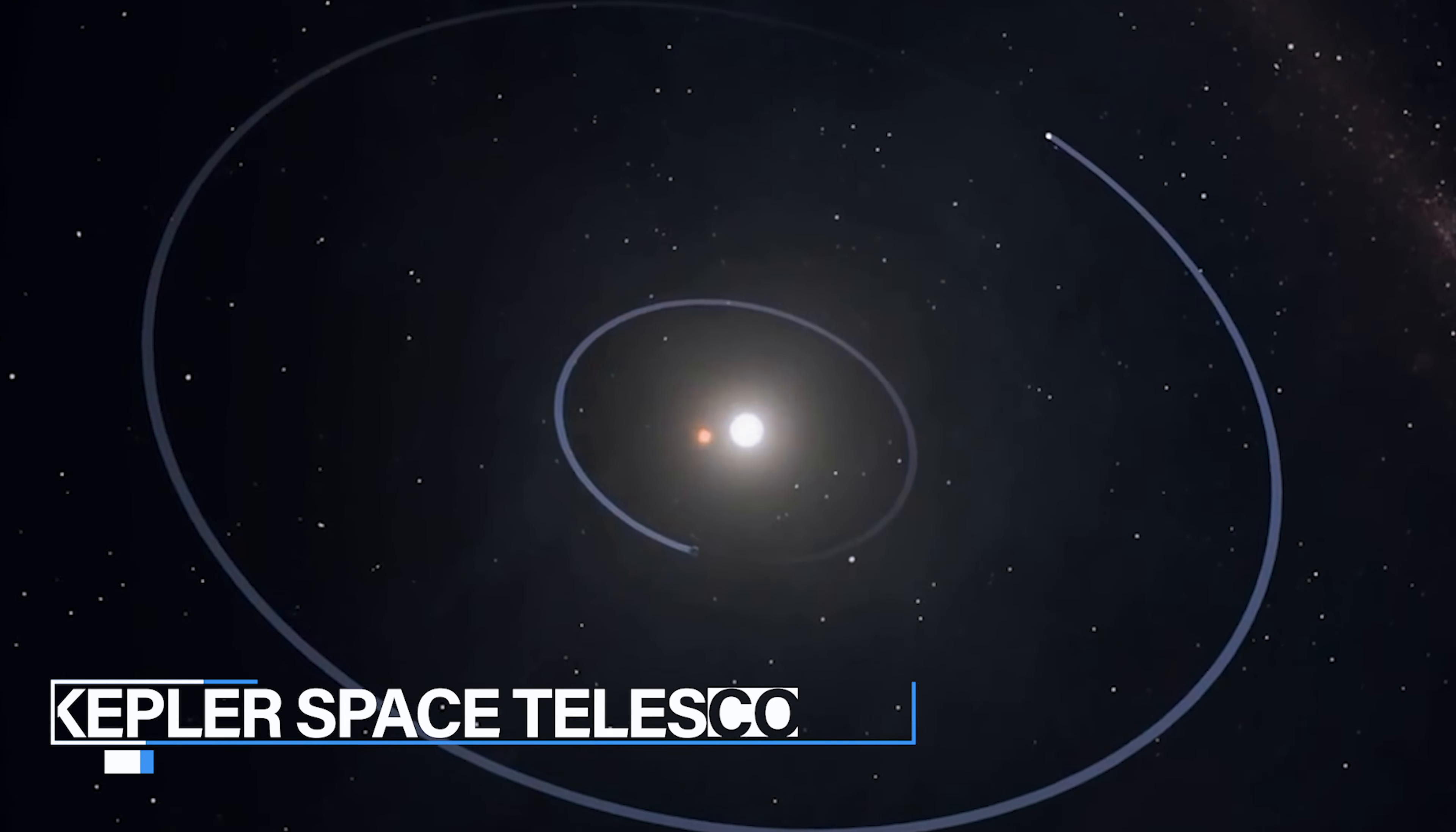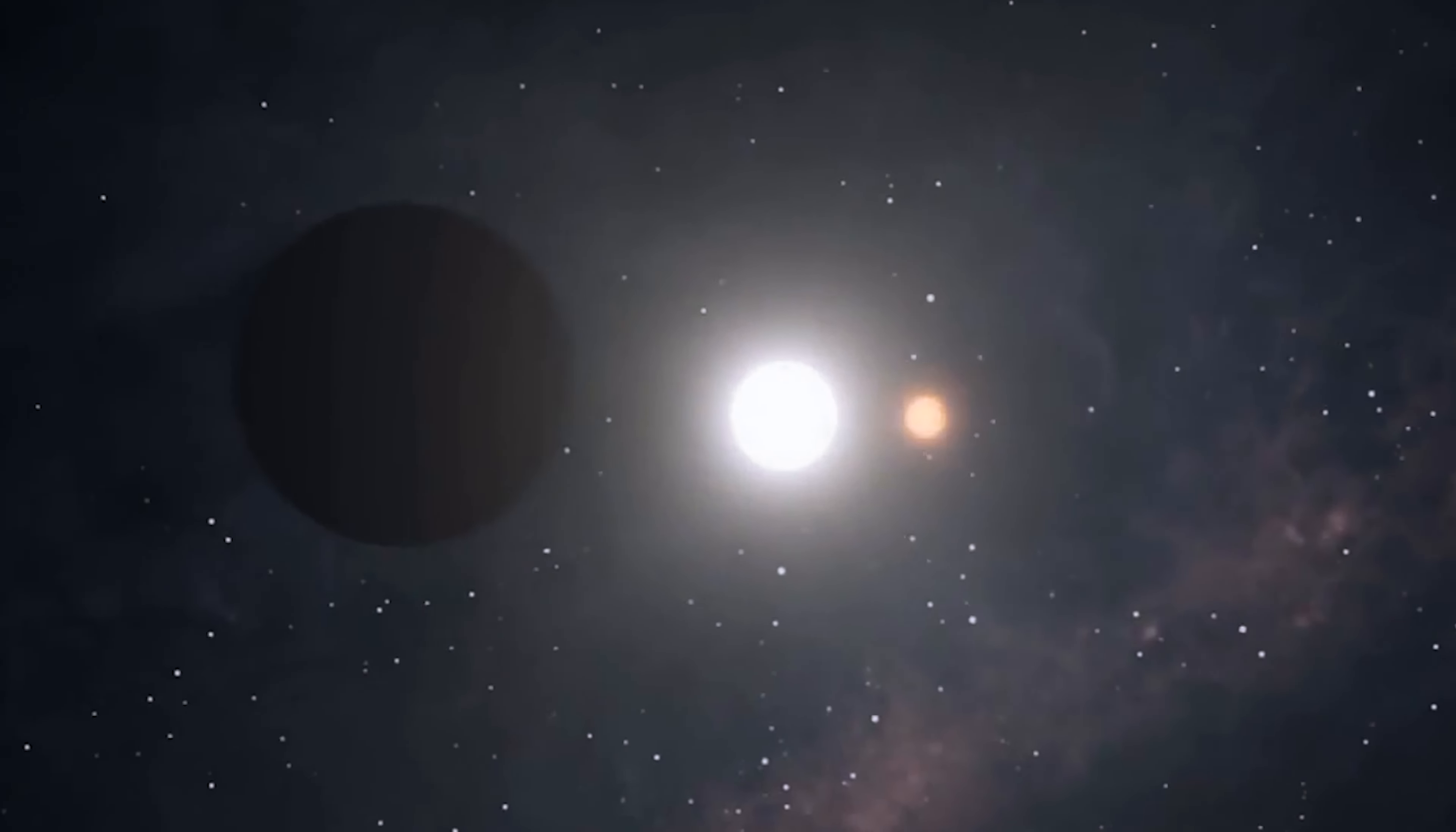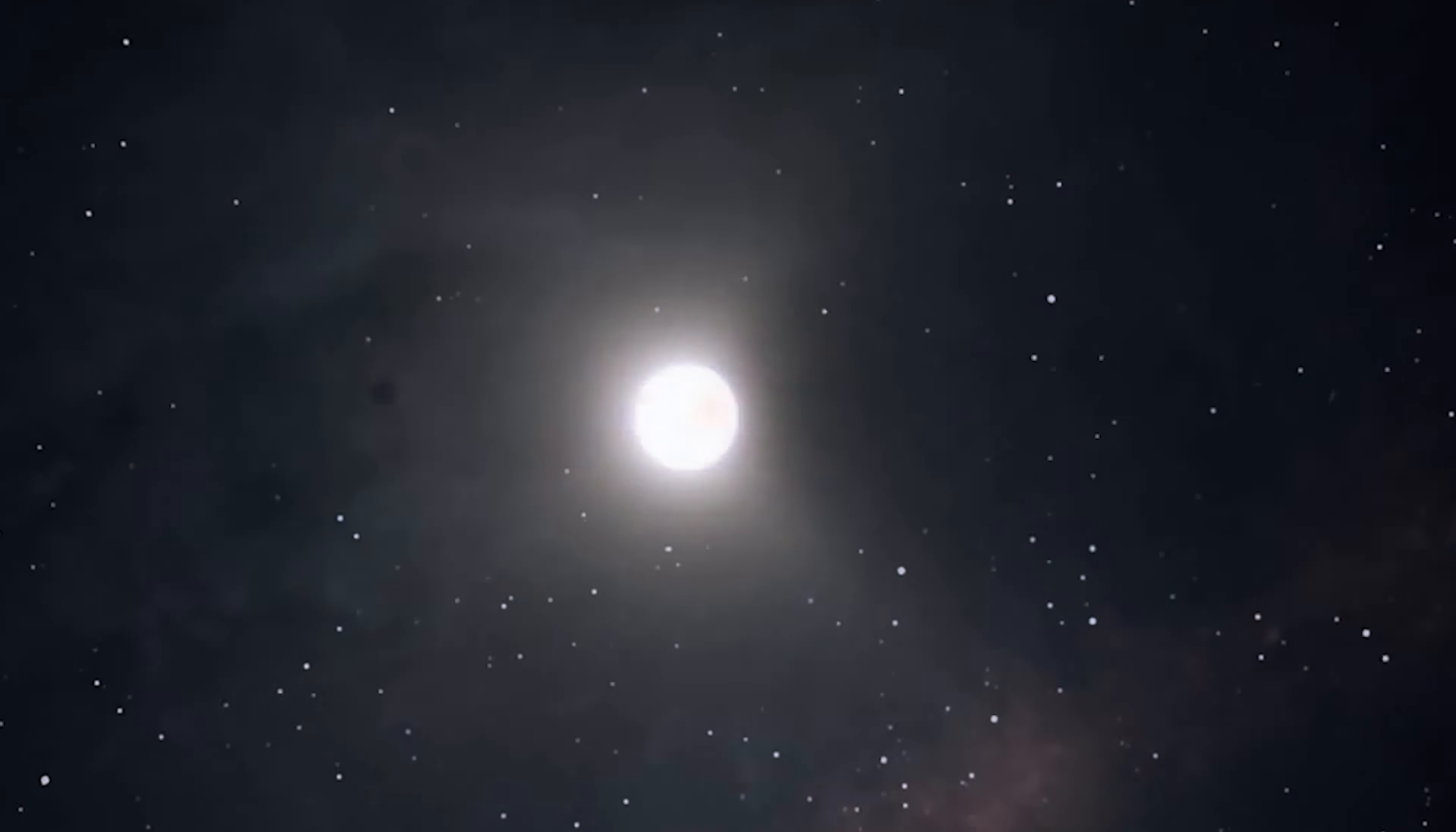Number two, Kepler Space Telescope, launched in 2009. The Kepler Space Telescope is a retired space telescope that was sent into space by NASA in 2009 to find planets around other stars that are about the same size as Earth. The spacecraft, which was named after the astronomer Johannes Kepler, was sent into a heliocentric orbit that follows the Earth. William J. Buraki was the main person who looked into it.